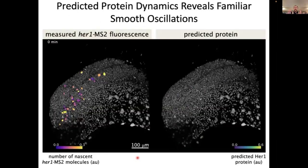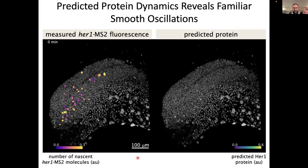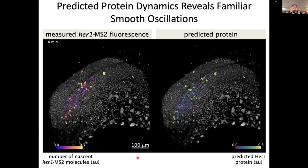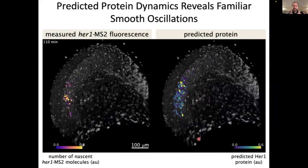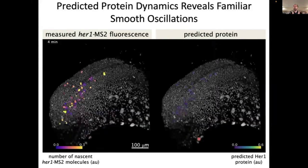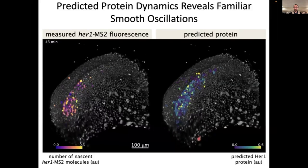We still can't measure protein and RNA at the same time, but what we can do is grab the measured RNA dynamics and predict what the protein dynamics would be by integrating through the central dogma. So on the left, I'm going to show you the same movie of transcription from the previous slide, and on the right, I'm going to show you the predicted amount of HER1 protein given the transcription we've measured. What I want you to see is how we're getting these smooth protein oscillations that at least qualitatively look like the ones that Andy and other people can see.